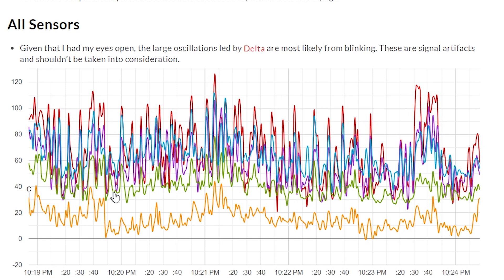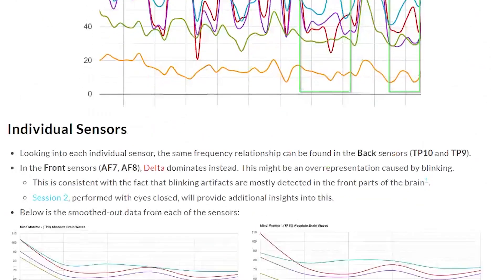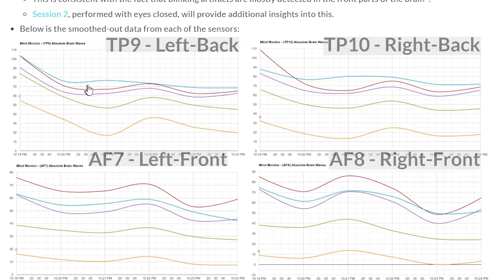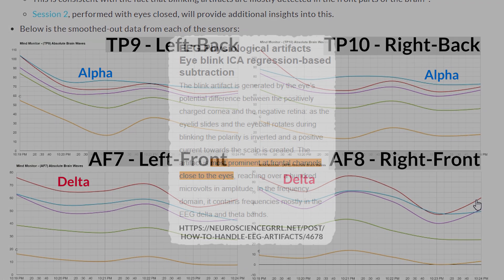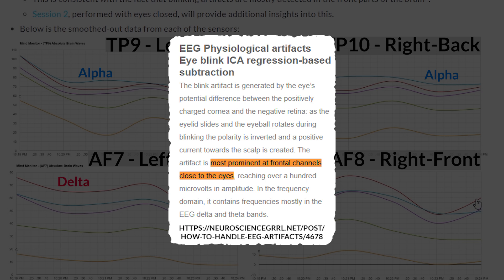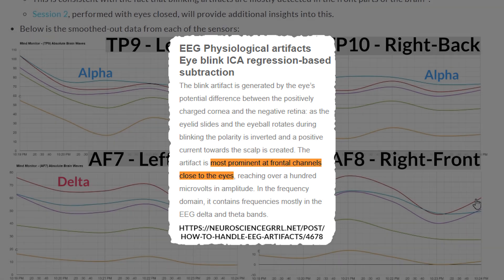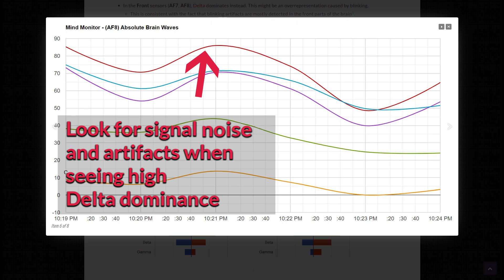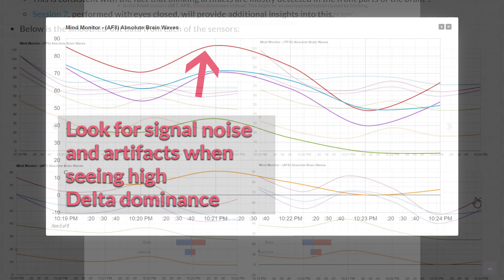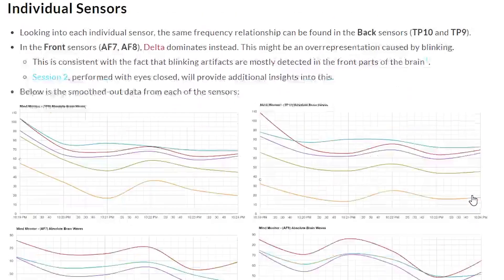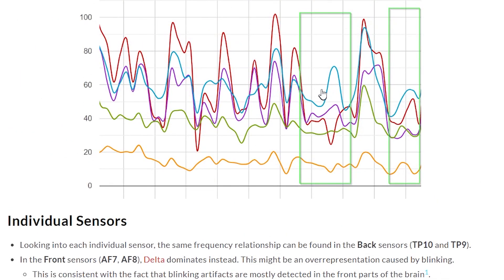Looking at an average from all sensors, we can see large and regular peaks from the slowest frequencies, with delta being the most volatile. These are almost certainly signal artifacts from blinking. Looking at each individual sensor smoothed out, we see alpha dominating in the back sensors and delta dominating in the front sensors. Blinking artifacts are mostly detected in the front sensors, so delta is very likely overrepresented there.